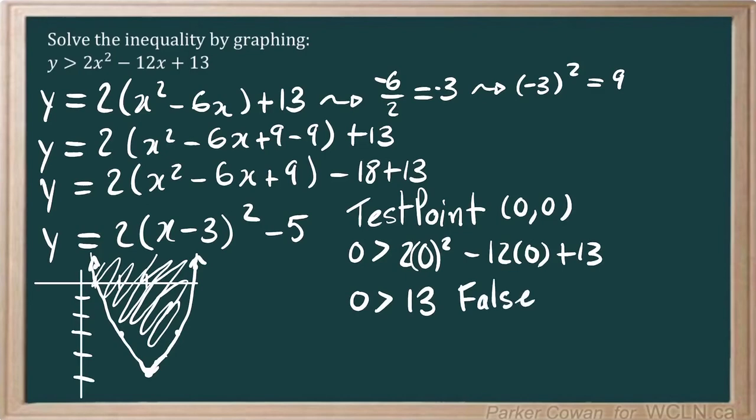And like I say, since this test point is at 0, 0, it falls outside of the parabola. But the statement is false. That means we shade on the inside. So as we can see, both methods work.